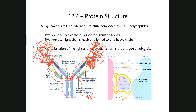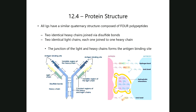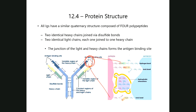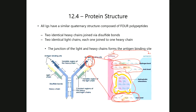If you zoom in to what's happening at the binding site, the antibody and antigen interact through any combination of intermolecular interactions: hydrogen bonding, ionic interactions (salt bridges), hydrophobic London dispersion interactions — but these antigen-antibody interactions are never covalent. There are no disulfide bonds or covalent bonds between antigen and antibody; disulfide bonds are only present in maintaining the structural integrity of the immunoglobulin itself. The antigen-antibody interactions are entirely non-covalent, which means they can attach and detach.